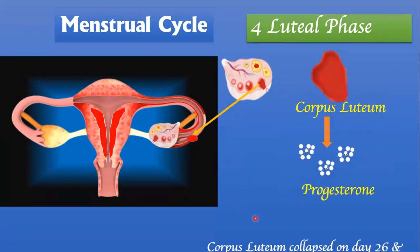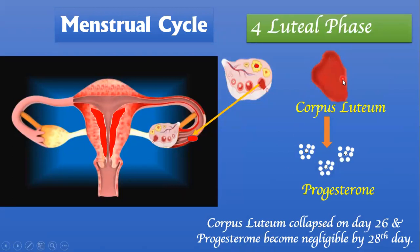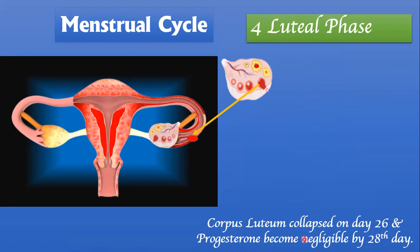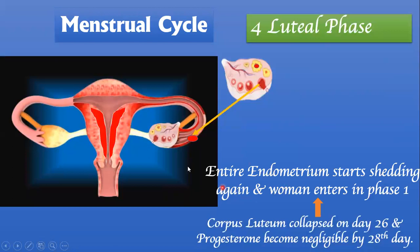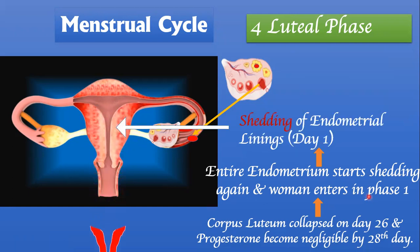At the end of the luteal phase, around day 26, the corpus luteum — in the absence of pregnancy — starts collapsing. Once the corpus luteum collapses, progesterone levels become negligible. Since progesterone was providing nourishment and blood vessels to the endometrium, its absence causes the endometrium to start shedding again, and the woman enters phase one. This is how the cycle continues.